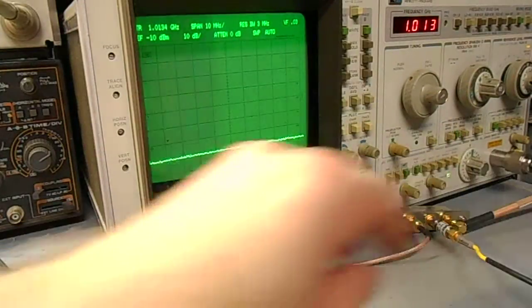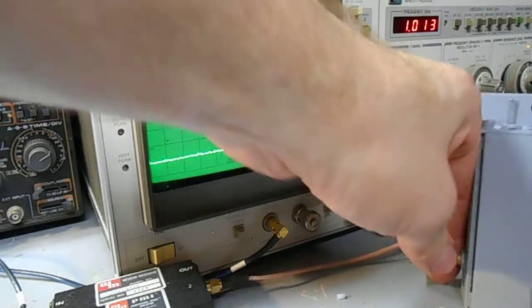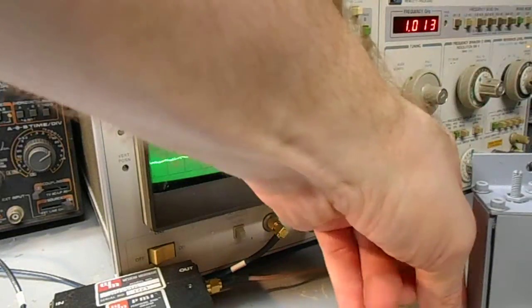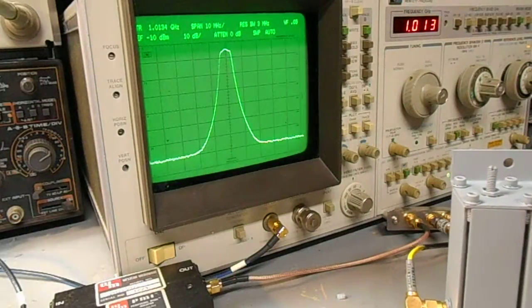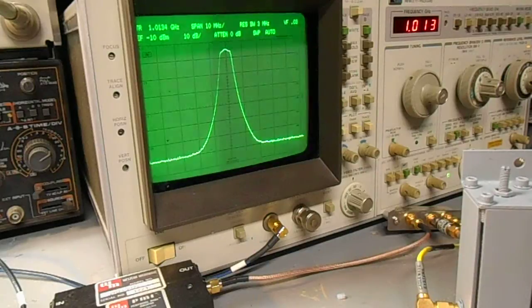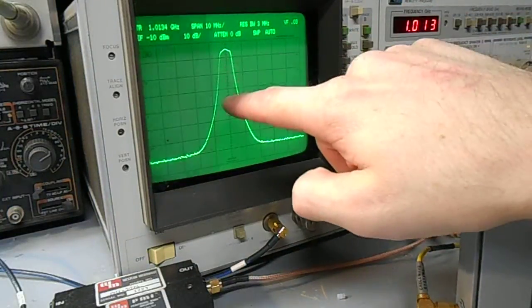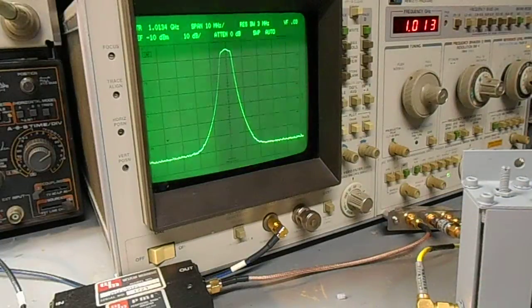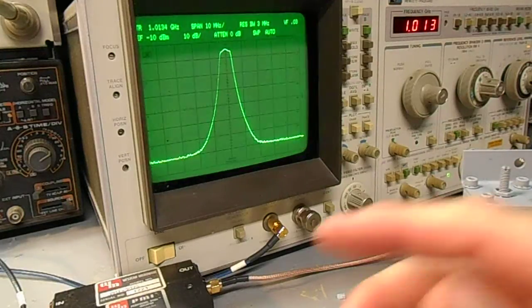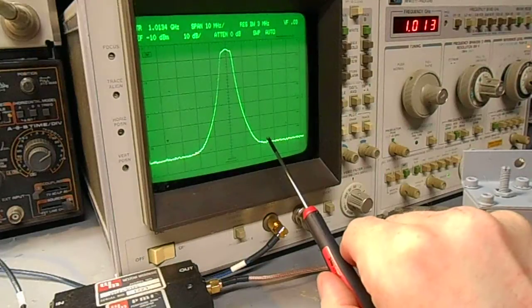I can show you a frequency sweep real quick. The insertion loss of this model was around 4 dB. This is a sweep centered at 1.0134 GHz right now. 10 MHz per horizontal division, 10 dB per vertical division. Our main image is going to be around 21.4 MHz from the center. So it'll be around here as you can see. We're basically in the noise already.